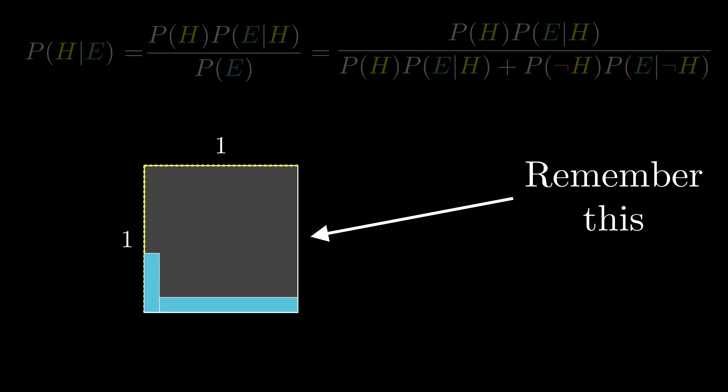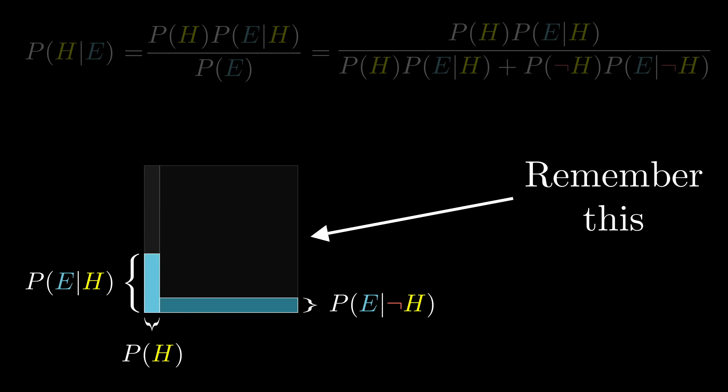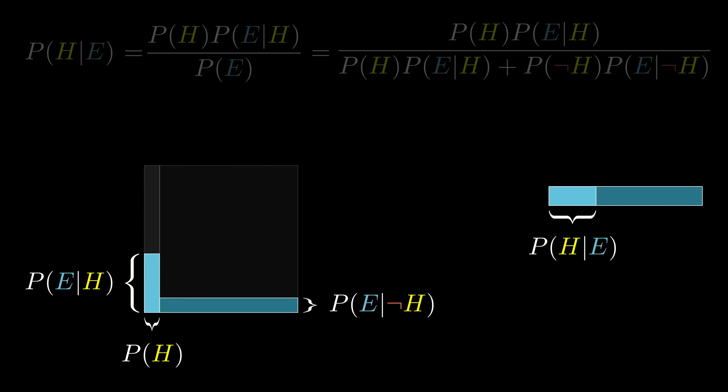Rather than bringing to mind some specific number of examples, like 210, think of the space of all possibilities as a one by one square. Then any event occupies some subset of this space, and the probability of that event can be thought about as the area of that subset. So for example, I like to think of the hypothesis as living in the left part of the square with a width of P(H). Now I recognize I'm being a bit repetitive, but when you see evidence, the space of possibilities gets restricted, right? And the crucial part is that that restriction might not be even between the left and the right.